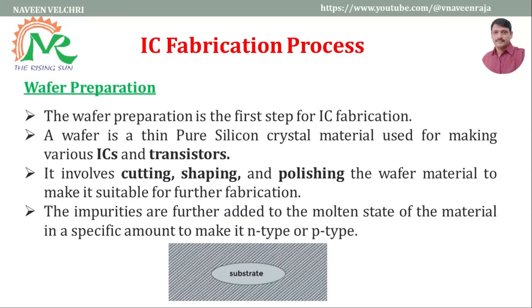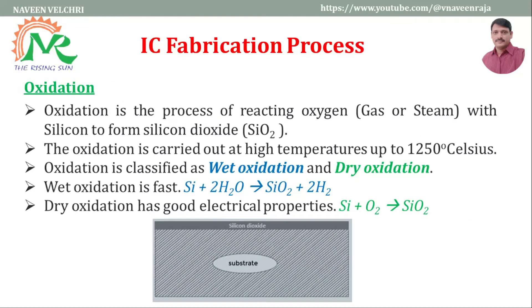The first step is wafer preparation. The wafer is a thin, pure silicon crystal material used for making various ICs and transistors. If you want to use the substrate as n-type or p-type, you have to diffuse some impurities into it. For an n-type substrate, you add pentavalent elements; for a p-type substrate, you add trivalent impurities. Wafer preparation involves cutting, shaping, and polishing the wafer material to make it suitable for further fabrication.